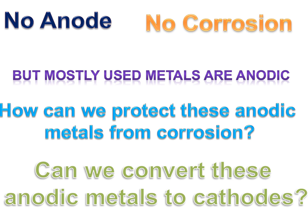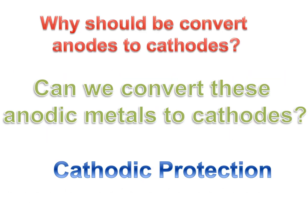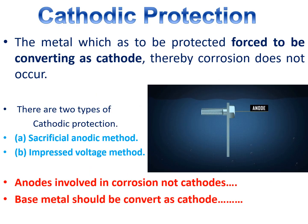So how can we protect these anodic metals from corrosion? Can we convert these anodic metals to cathodes? If you convert anodic materials to cathodic metals, you can prevent corrosion. Cathodes are involved in reduction — the metal involved in reduction does not involve in corrosion. That's why we need to convert all anodes to cathodes. The metal we want to protect should be converted into a cathode. This can be done by cathodic protection.